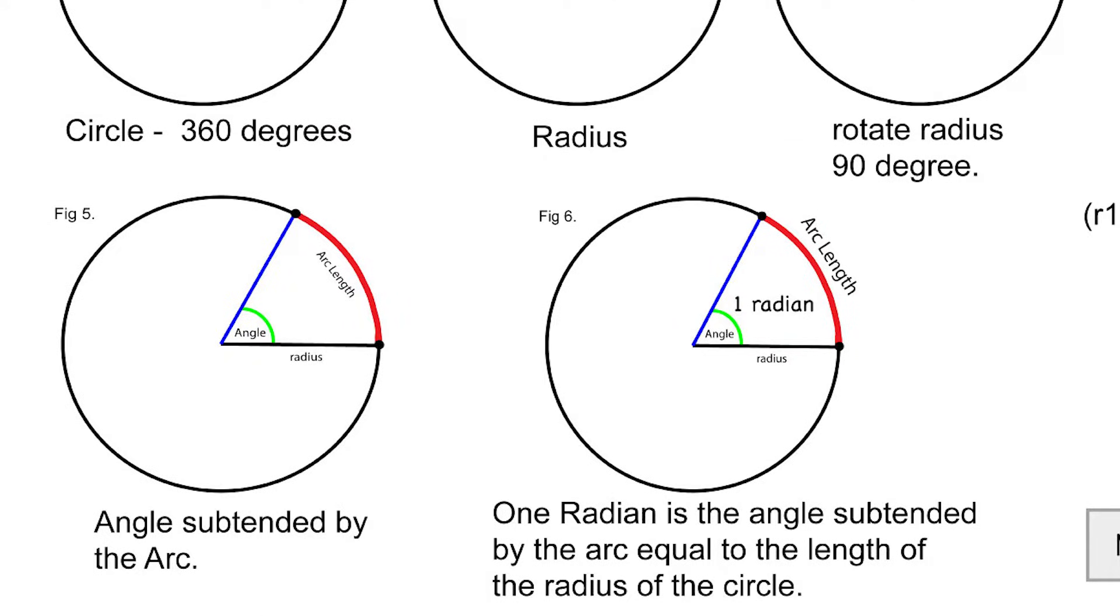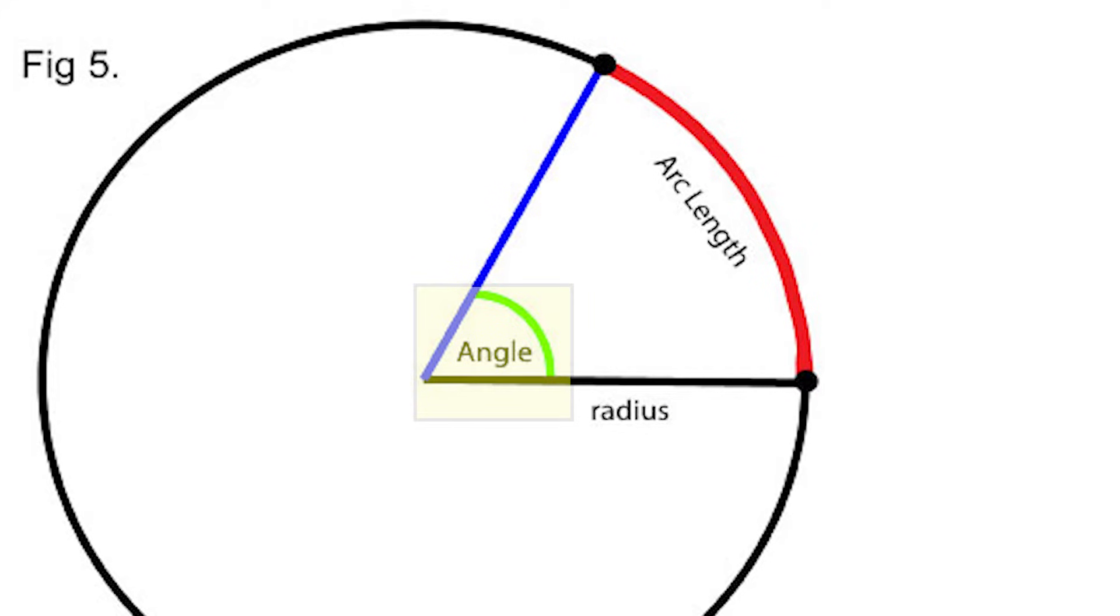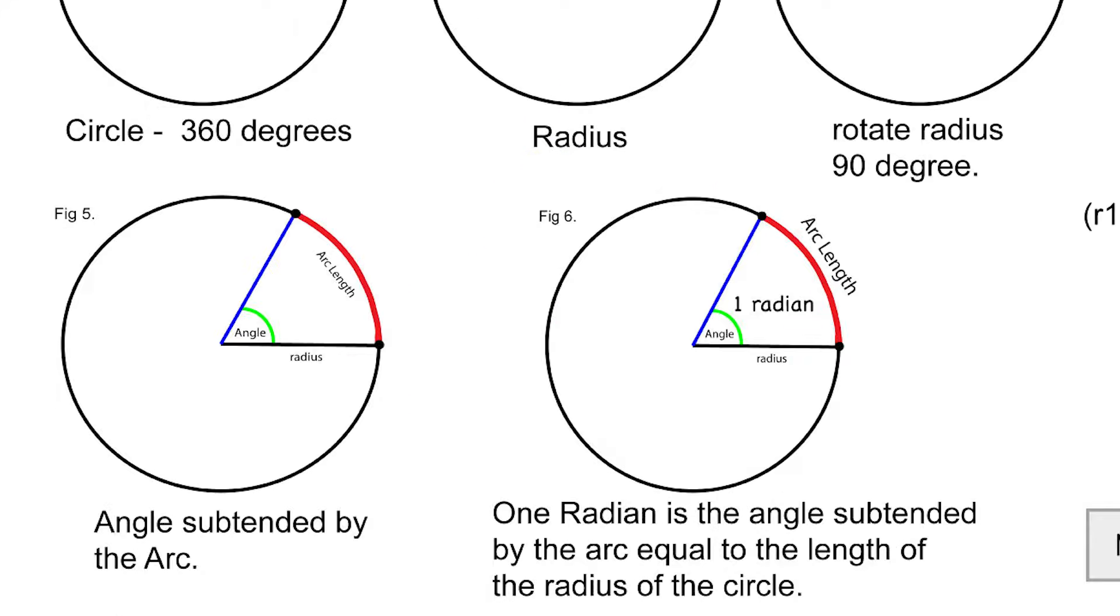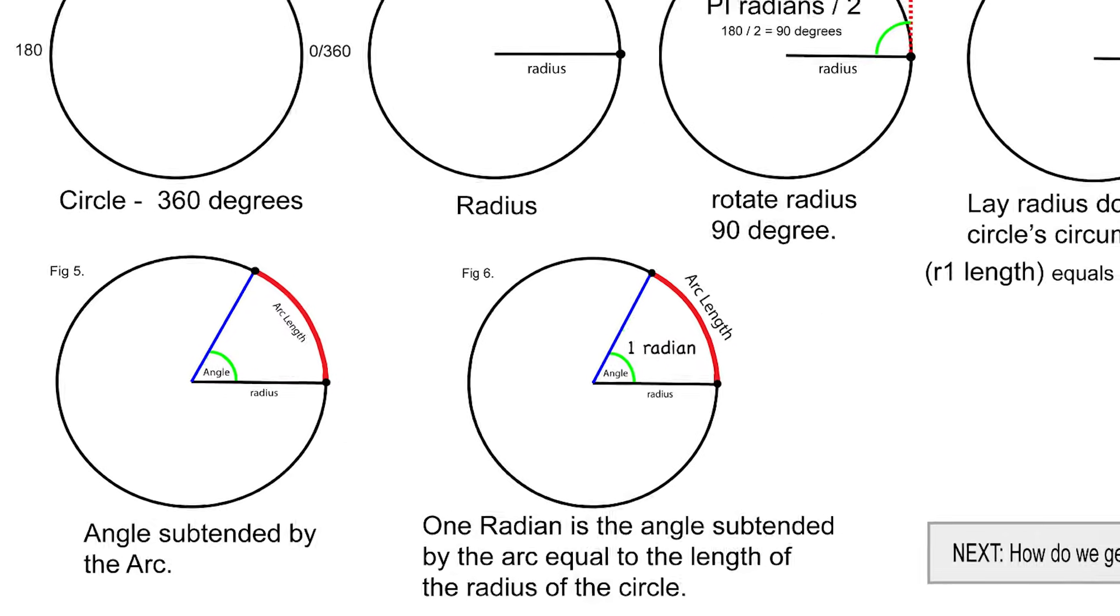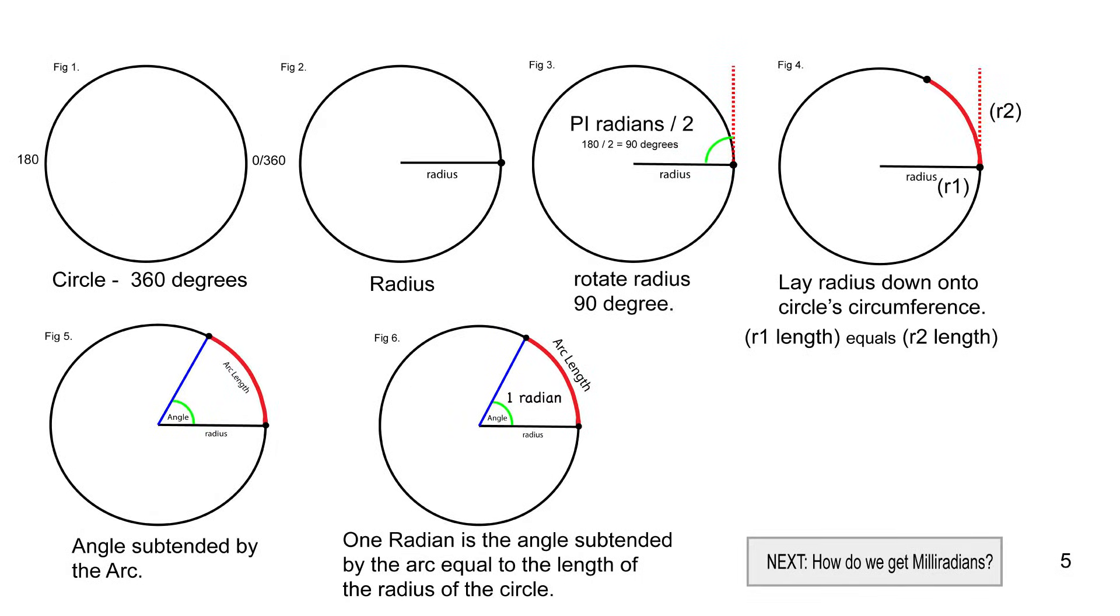And the arc length, as you can see, creates two points and then we draw a line and that line creates the angle. So one radian is the angle created or subtended by the arc equal to the length of the radius of the circle. Next I'm going to show you how we get a milliradian out of a radian.